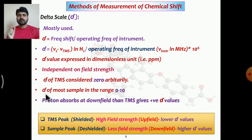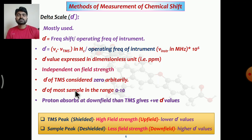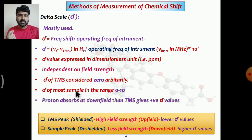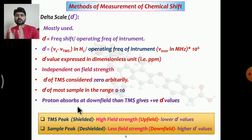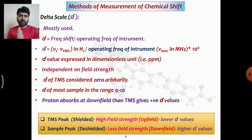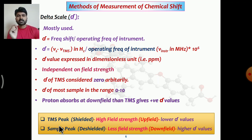The delta values of most protons in organic molecules are in the range 0 to 10, though sometimes higher — for example, protons of carboxylic acids can show values up to 12 ppm, so the range can be 0 to 12. Protons that absorb downfield from TMS give a positive delta value.